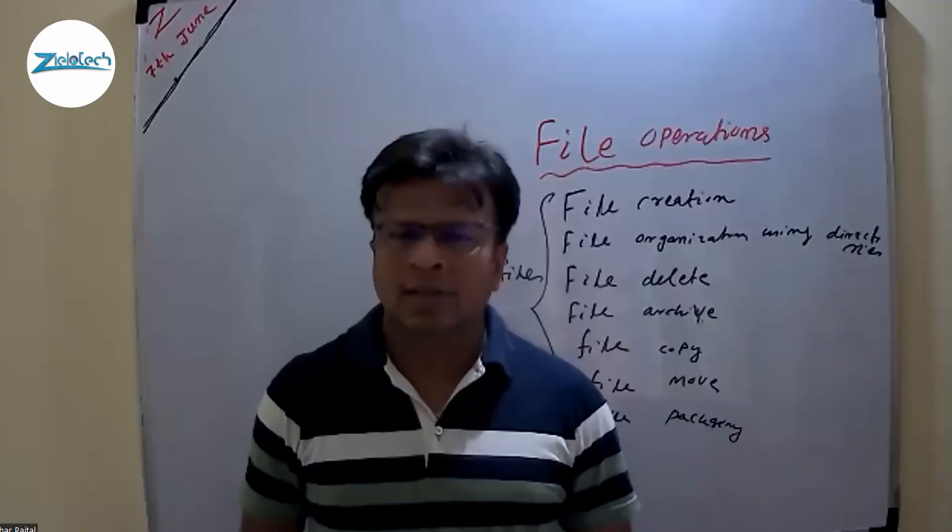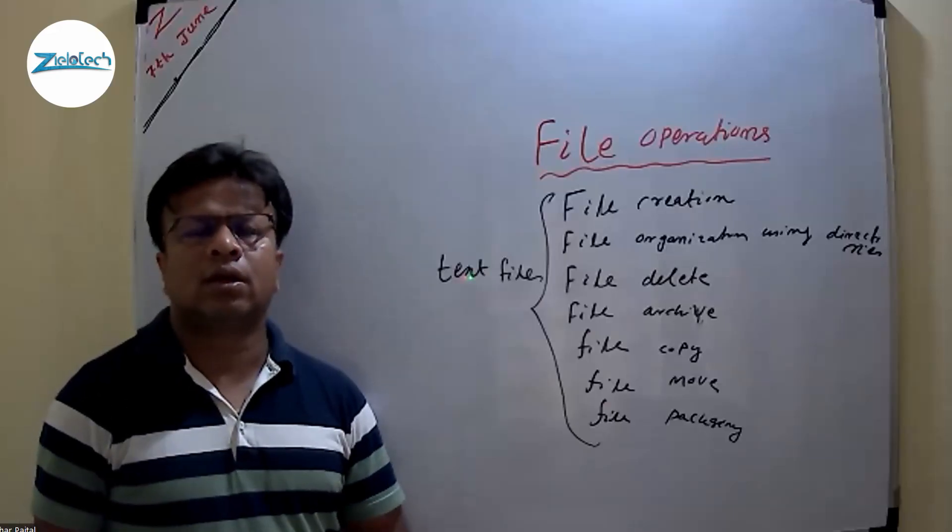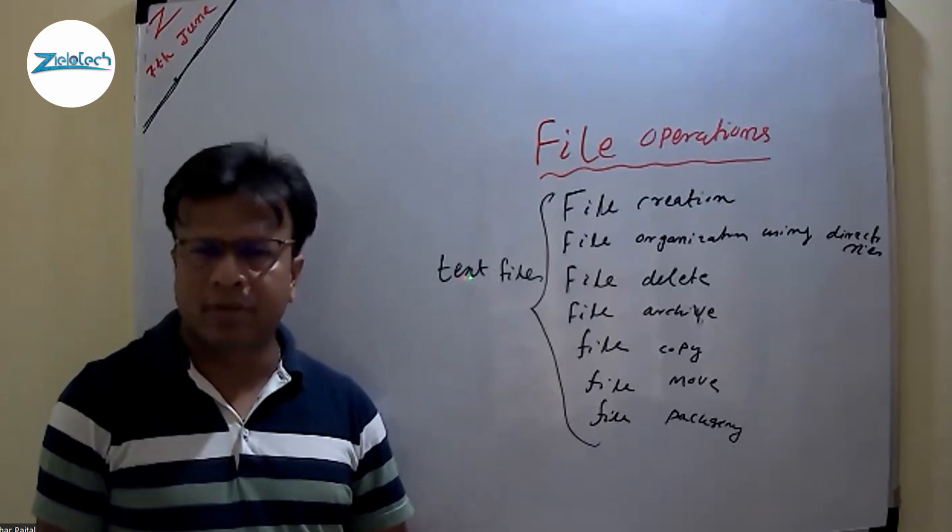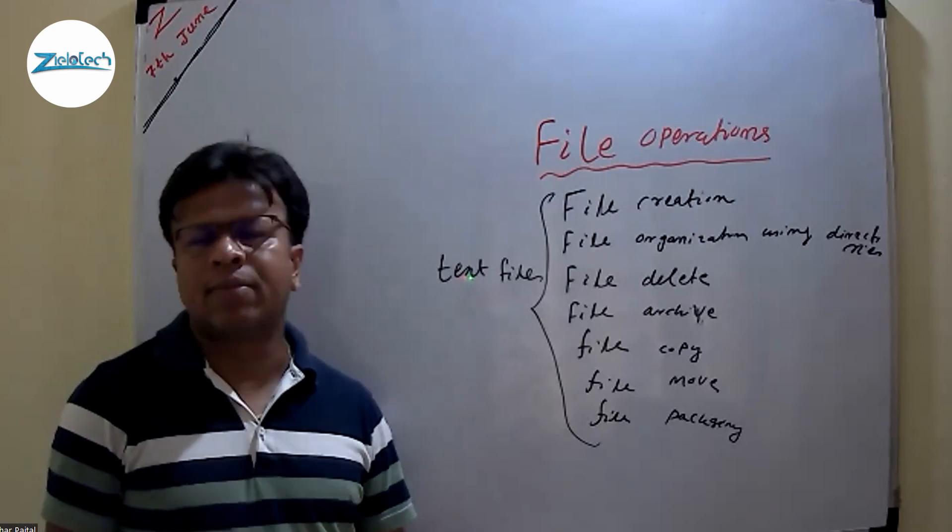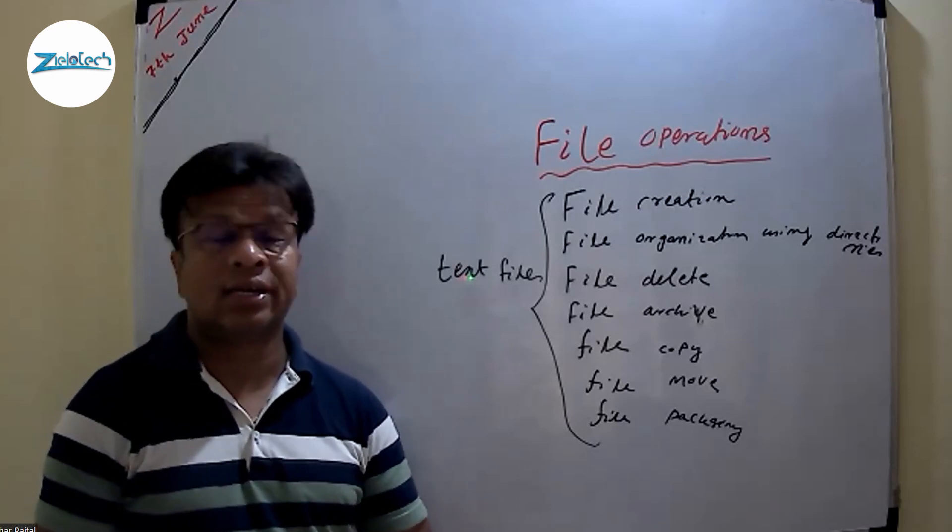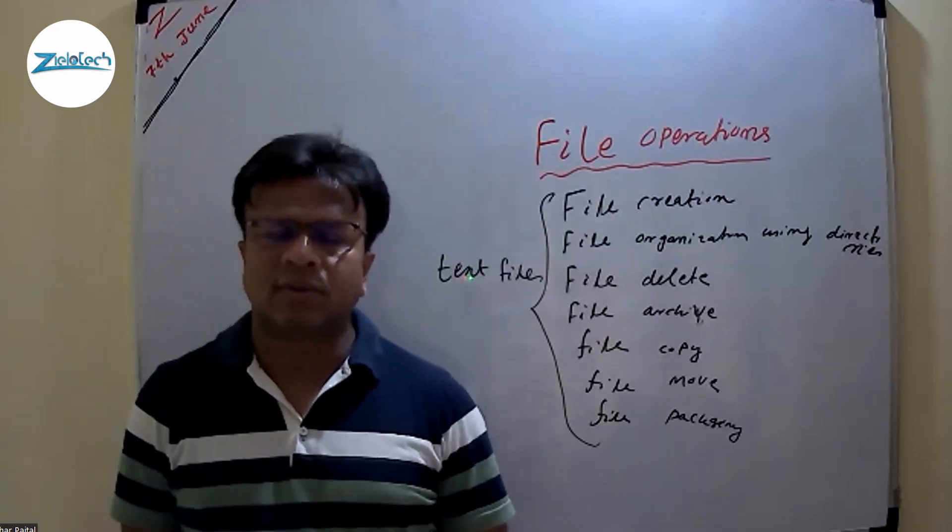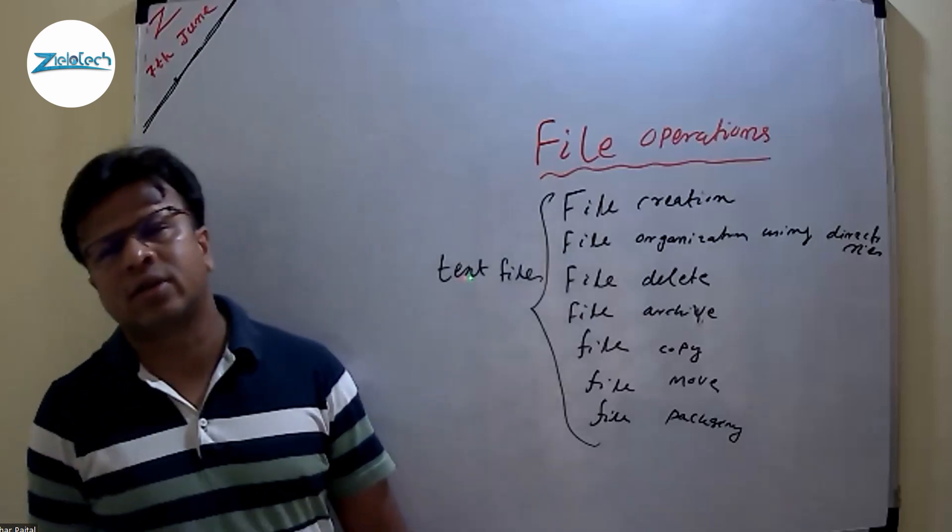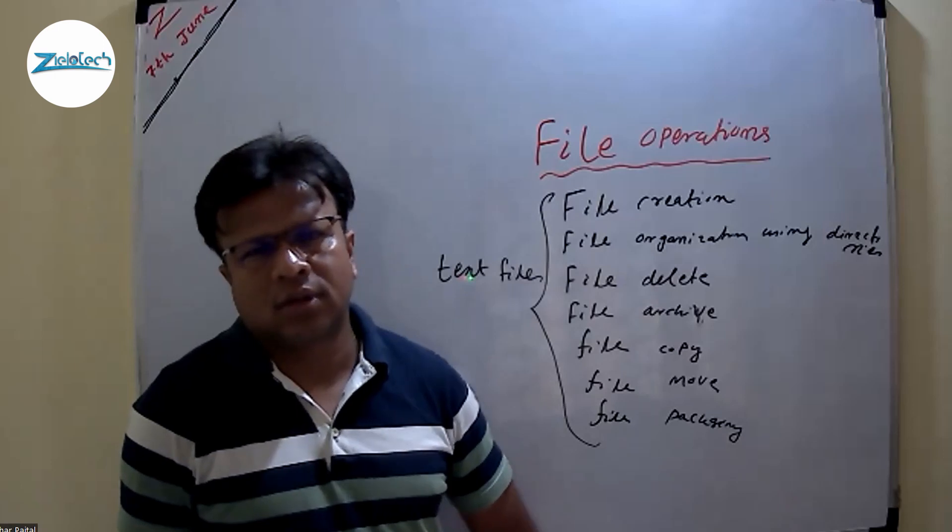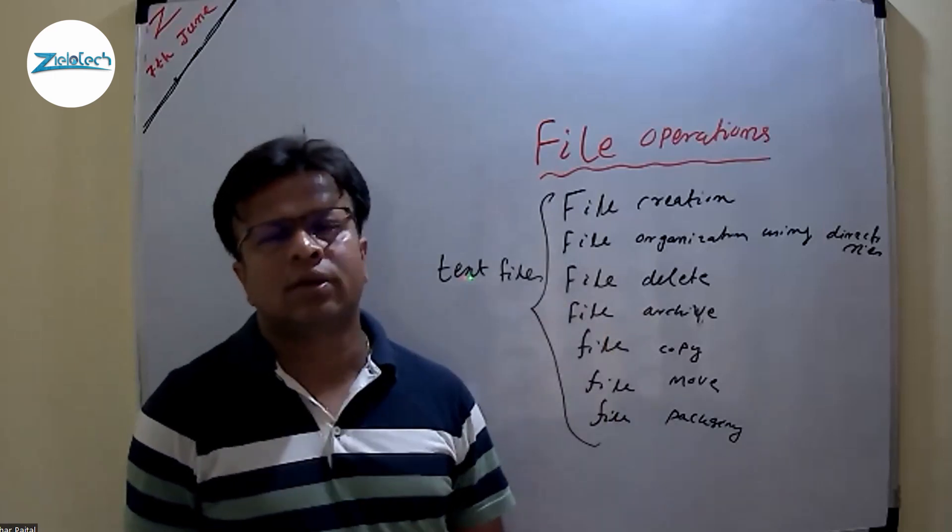Interact with the configuration files. Data files means it's a text file basically. All the information like process information, memory information, disk information and database information - whatever data, they are stored as a data file, they are stored as text content. Process information, memory, RAM or any disk information, whatever information we are seeing through Linux, 99% information are of text format. That's why we are going to deal with the text format as data only.